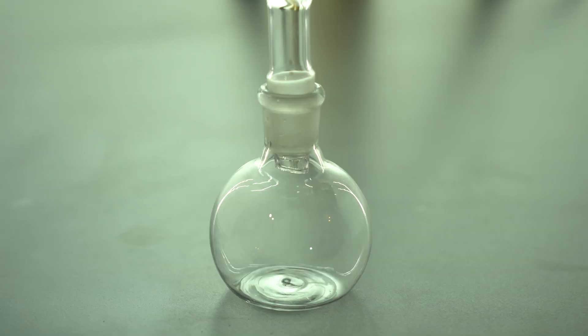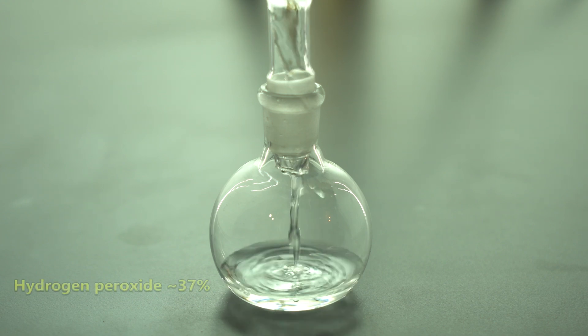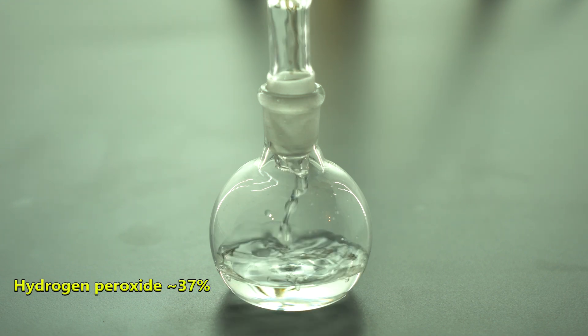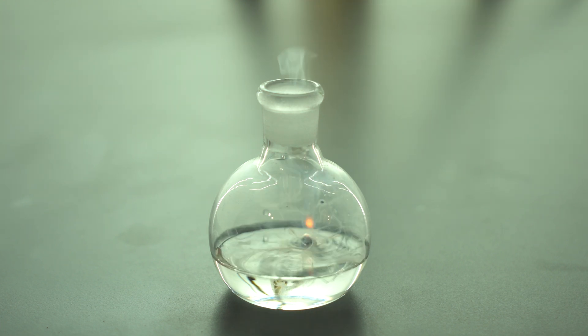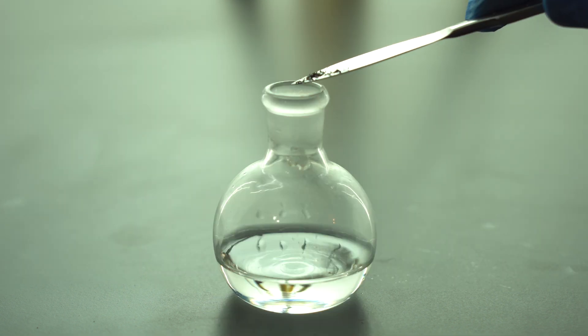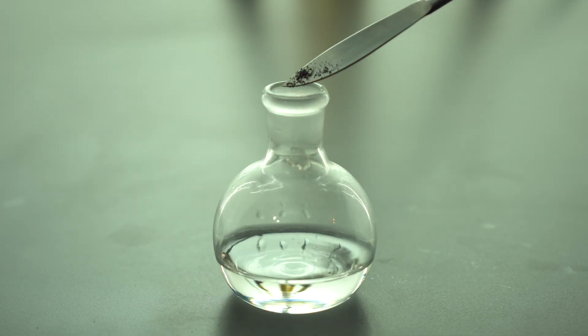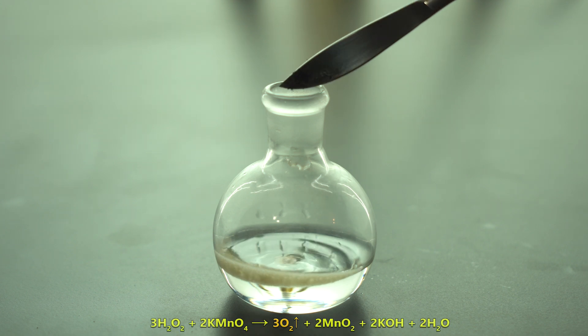First, let's compare the reaction of potassium with hydrogen peroxide and the one with decomposing hydrogen peroxide. I pour hydrogen peroxide into a small flask and drop a small piece of potassium. And now I add several potassium permanganate crystals in the flask with hydrogen peroxide, which will cause intense oxygen evolution.